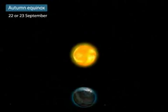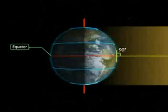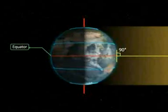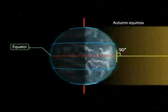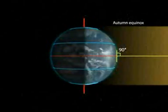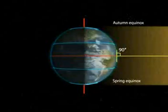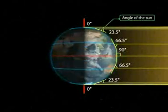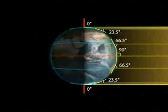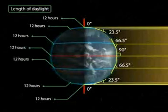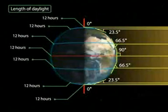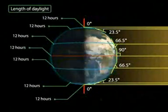Autumn Equinox — On the 22nd or 23rd of September, the overhead sun is over the equator again. The equator receives the largest amount of solar radiation. On this day, the northern hemisphere is in the autumn equinox, while the southern hemisphere is in the spring equinox. The angle of the sun decreases towards the poles. The two hemispheres receive a similar amount of solar radiation, and the length of day and night is the same at all places on the Earth.